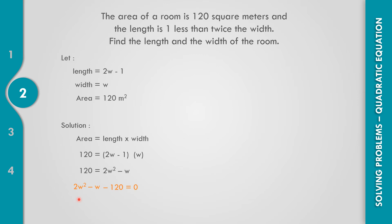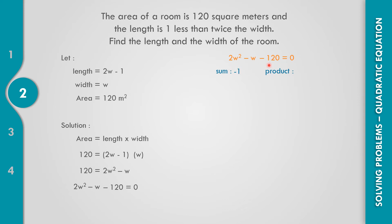We need to get the sum and product of the roots to identify the factor. The sum equals the value of B, which is negative 1. And the product is 2 times negative 120, that is negative 240.